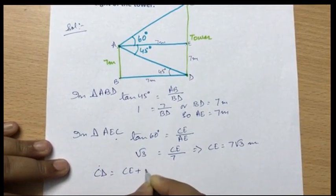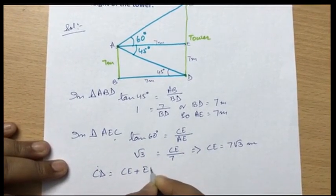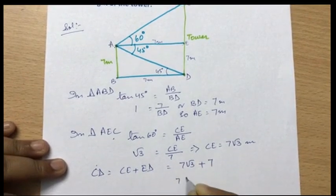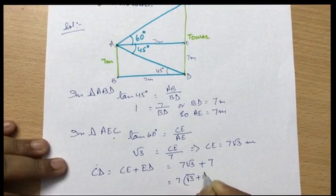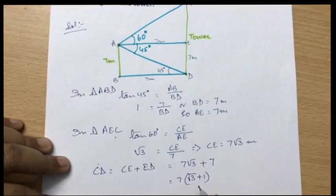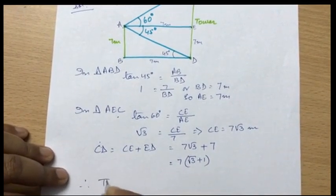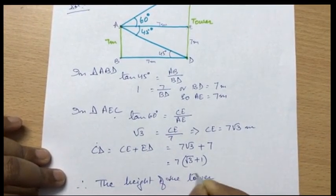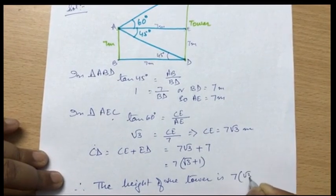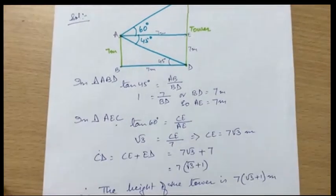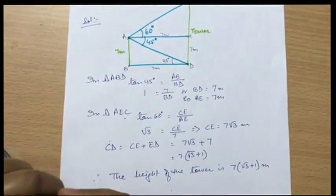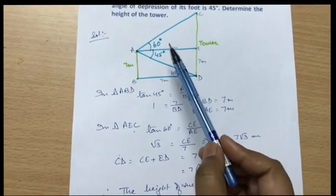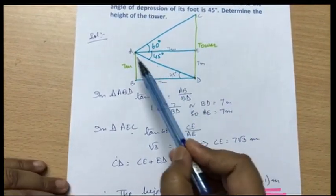So CE is 7 root 3 and ED is 7. The total height of the tower CD equals CE plus ED, which is 7 root 3 plus 7. Taking 7 common, CD equals 7(root 3 plus 1) meters. Therefore the height of the tower is 7(root 3 + 1) meters.